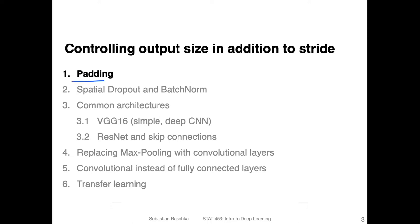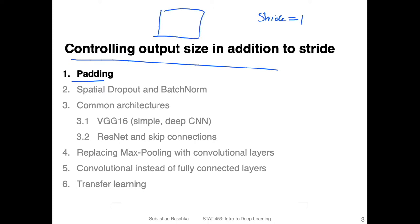Let's now talk about padding. Padding is a mechanism that allows us to control the output size, in addition to choosing the stride. Before, we talked about only the simple case of a stride of one, which means we move one pixel position to the right and one position to the bottom each time. We can also choose a stride of two, moving by two pixels each time, which would approximately shrink the size of the output by half.